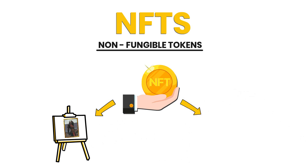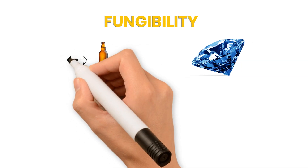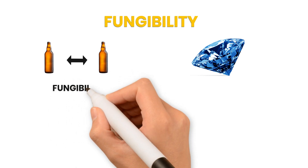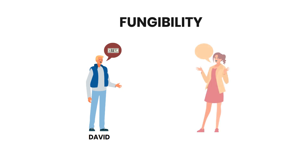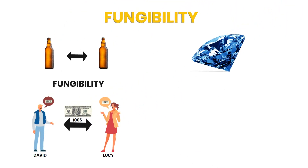Non-fungible is not a very popular word, so let's see what it really means. In economics, fungibility is the characteristic of goods or commodities where each individual unit is interchangeable and indistinguishable from each other. Like with most concepts, fungibility is best explained with an example. Fiat money such as the US dollar is a good example of something fungible. If David has a $100 banknote, he can replace it with Lucy's $100 banknote without affecting David or Lucy.